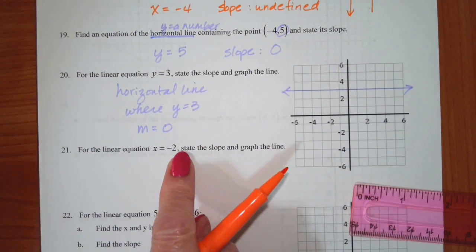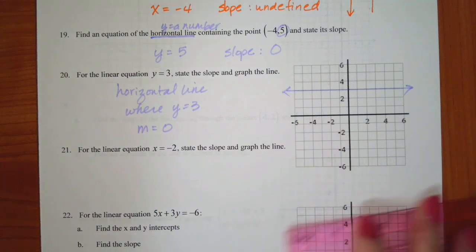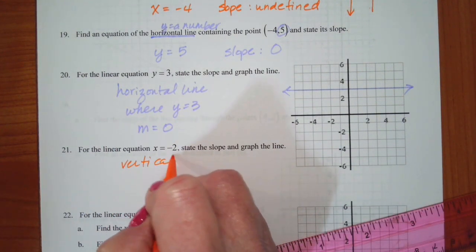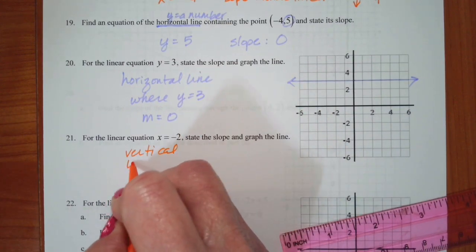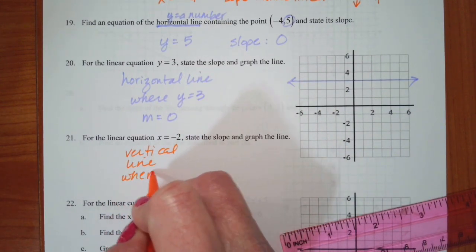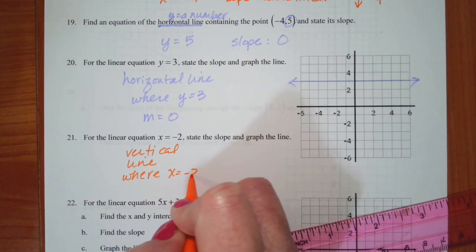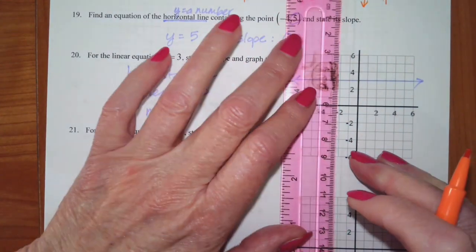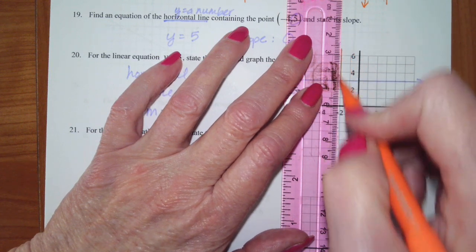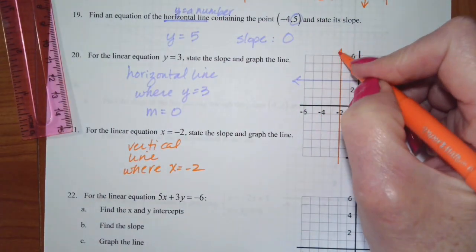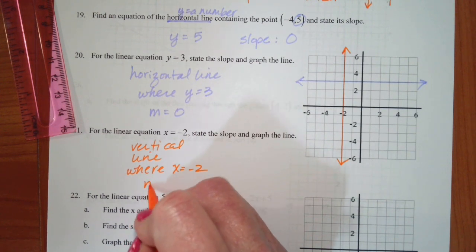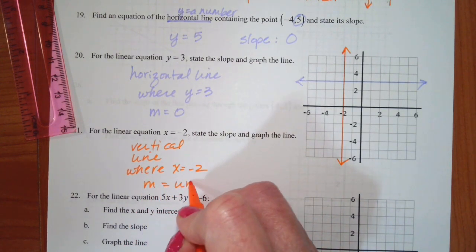For the linear equation x equals negative 2, that is a vertical line where x equals negative 2. The slope is undefined.